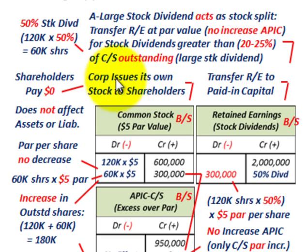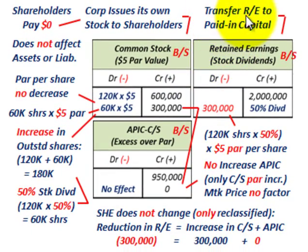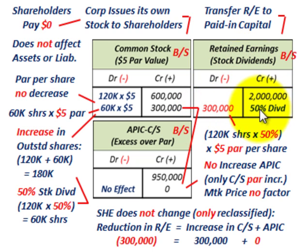Corp A is going to issue its own stock to its shareholders as common stock. The shareholders pay zero — this is just a dividend they receive. It does not affect any assets or liabilities on the balance sheet; all we deal with is shareholders' equity between retained earnings and common stock. With this large stock dividend, we're going to be transferring from retained earnings — the earned capital account — into the paid-in capital account, our common stock.